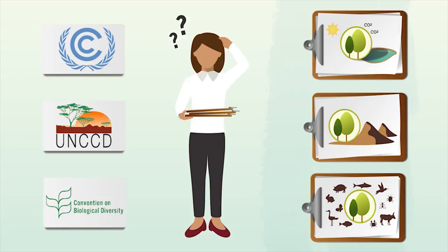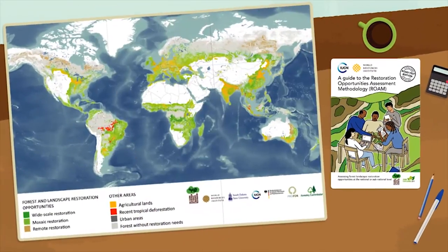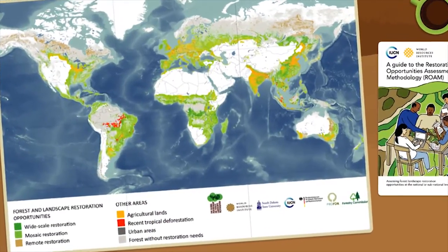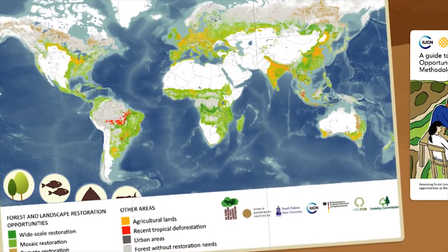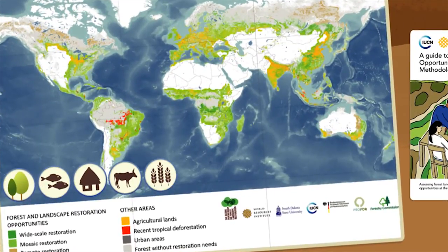Restoring degraded and deforested lands may be one way to meet these seemingly competing needs. Across the planet, more than 2 billion hectares of degraded land offer little for humans or nature. We can bring health and productivity back to these lands and prepare for the needs of the future.